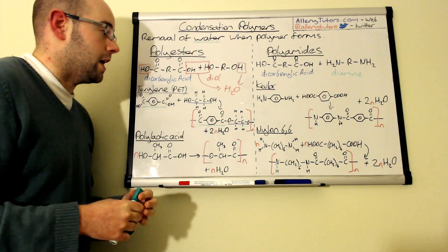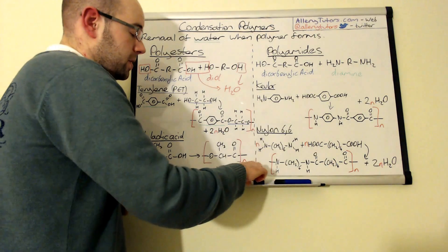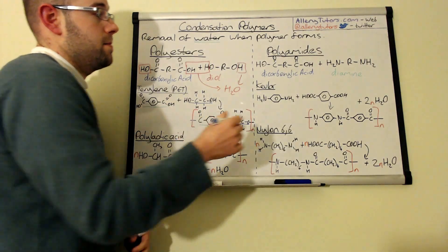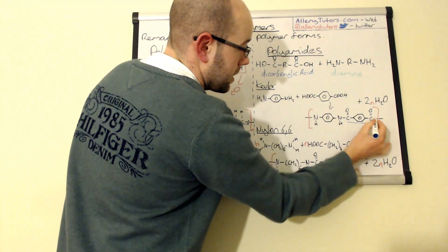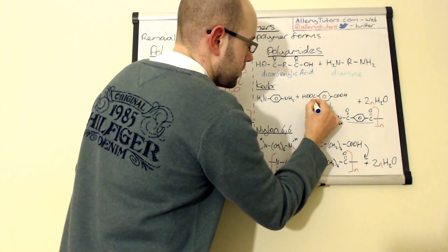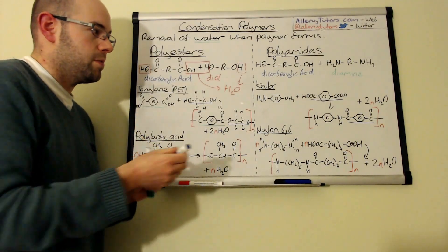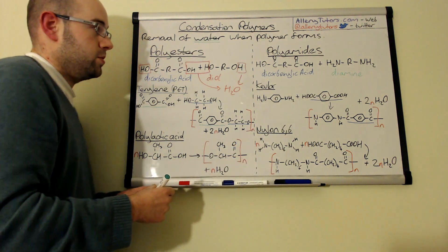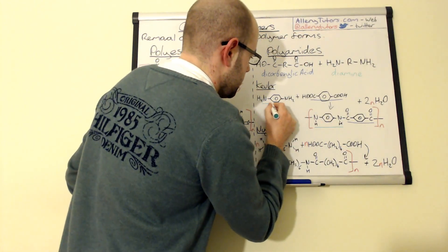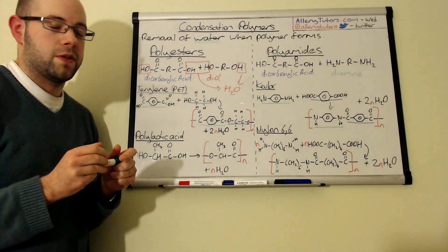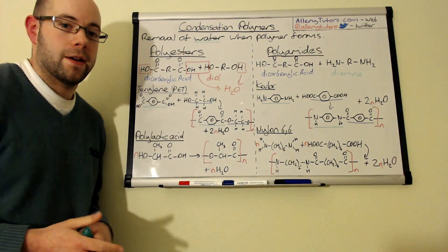Just to highlight where the parts of the Kevlar molecule come from: the dicarboxylic acid portion can be identified in the repeat unit, and the amine portions are visible on either side. The amide link is in the middle — you must include that. It's really important to be able to identify each part of the repeat unit from its original monomer.